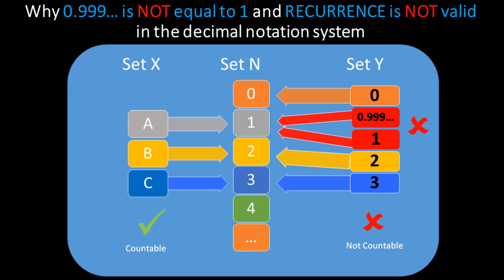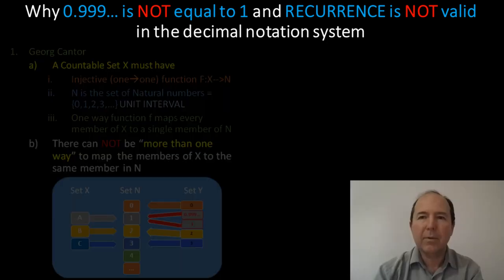Now, there is no need for any further discussion. It is simply not possible to count with a set of numbers that includes the number 0.999 recurring and the number 1. Okay, that's it. End of discussion.